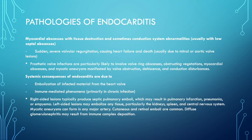Moving on to the pathologies of endocarditis: myocardial abscesses with tissue destruction and sometimes conduction system abnormalities; sudden severe valvular regurgitation causing heart failure and death. Prosthetic valve infections are particularly likely to evolve into valve ring abscesses, obstructions, vegetations, myocardial abscesses, and myocardial aneurysms manifested by valve obstructions and conduction disturbances.